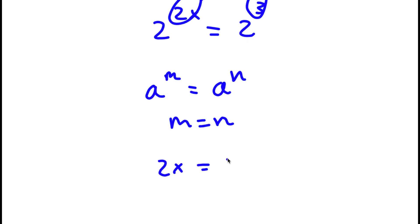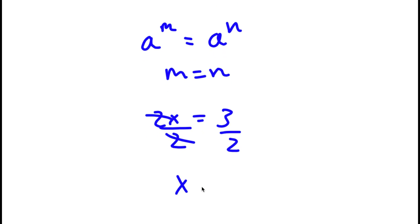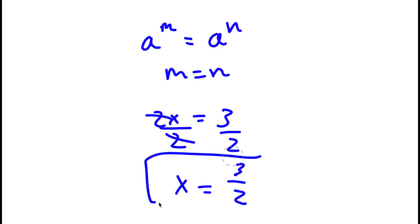So I have 2x is equal to 3, so I'm simply going to divide both sides by 2. These two cancel out, and I'll be left with x is equal to 3 over 2. So this is my answer.